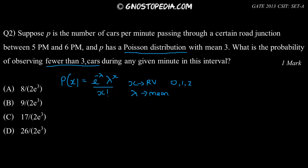Not equal to 3 because it's fewer than 3 cars. So lambda, the mean, is given to us as equal to 3.